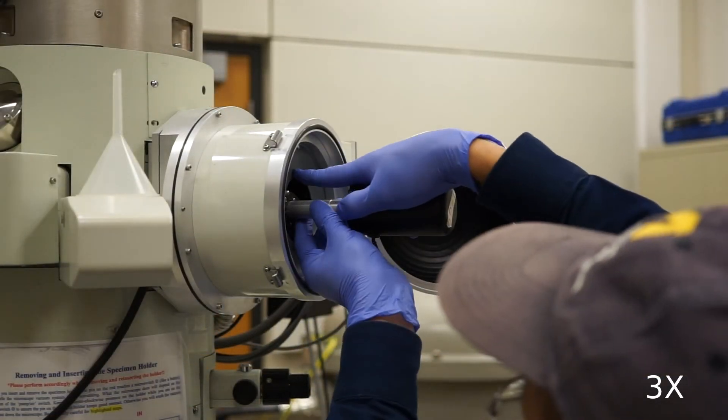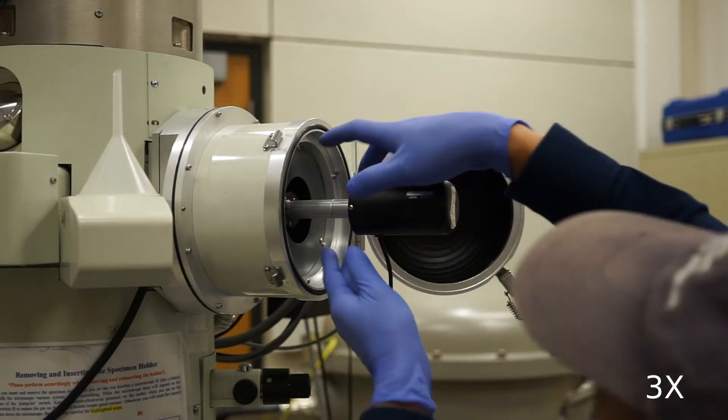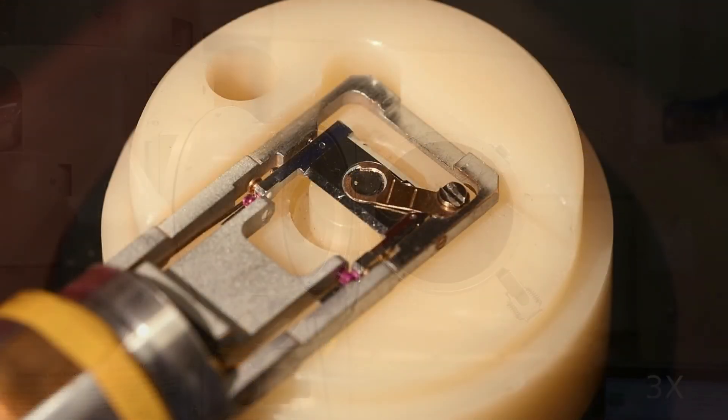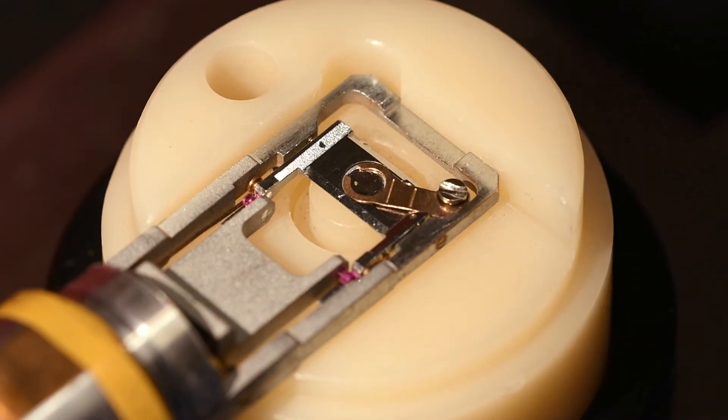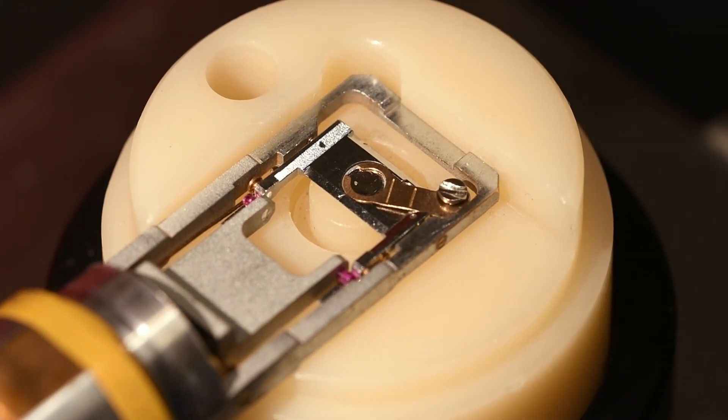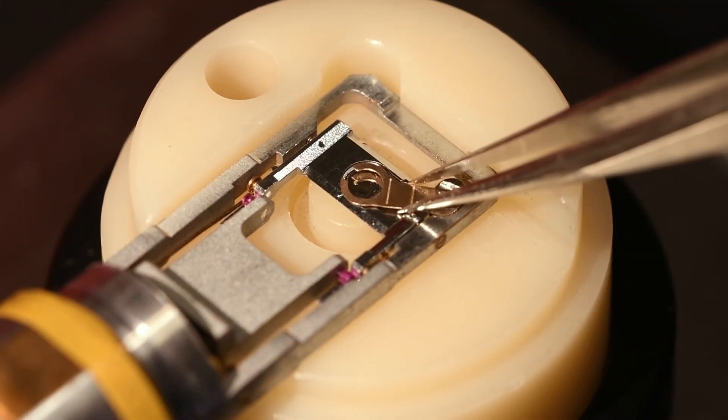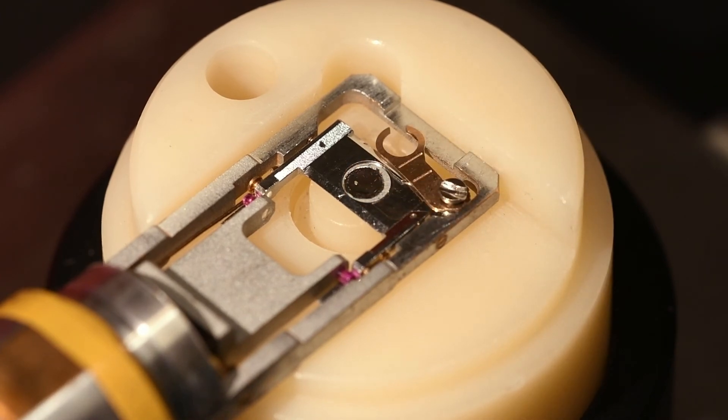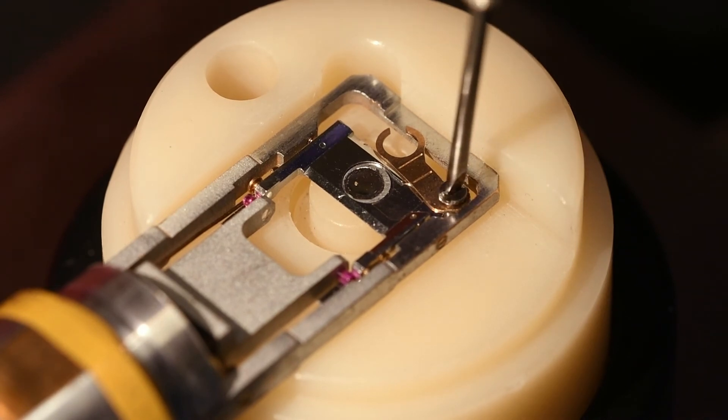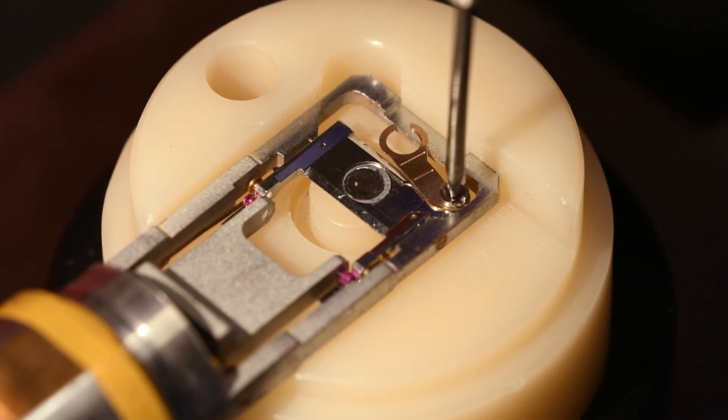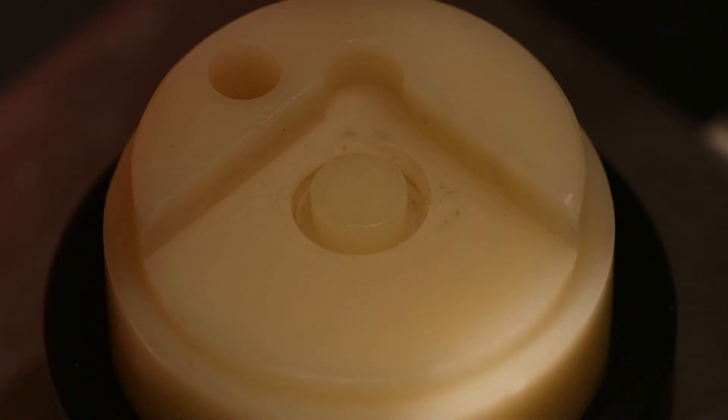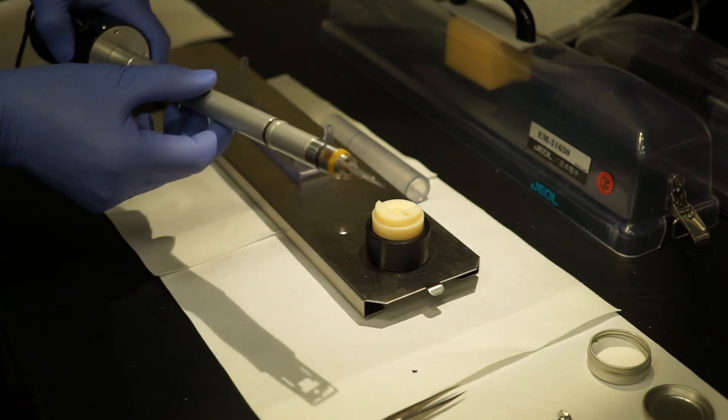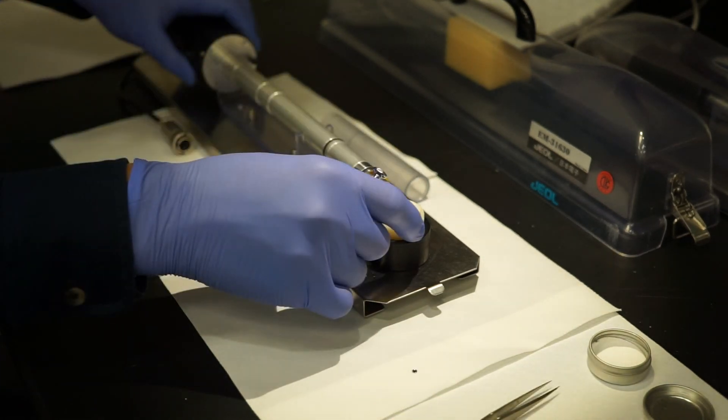Remove the sample holder from the TEM using the process shown previously. To remove your sample, loosen the screw. Use the tweezers to move the retaining arm aside. Gently tighten the screw. Lift the sample holder and lightly tap it to remove your sample. Lower the end of the sample holder on top of the beige support disc.